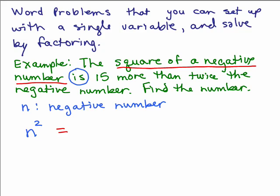Fifteen more than twice the negative number. Okay, fifteen more than something means you have to add fifteen to something. You're going to add fifteen, because it says fifteen more than something, more than twice the negative number. Well, if n is the negative number, twice the negative number would then be 2n.